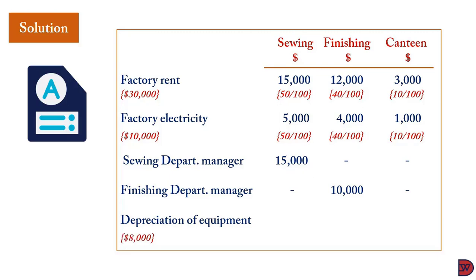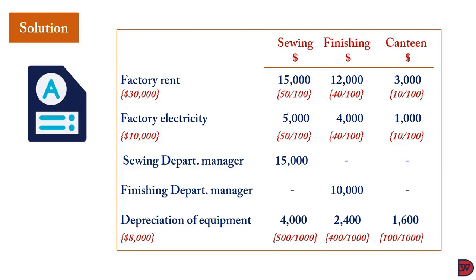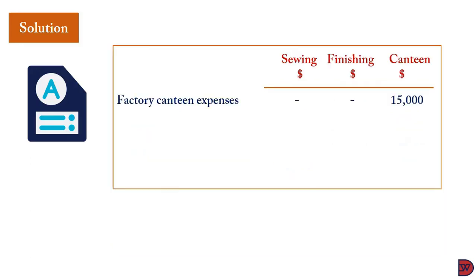For depreciation of equipment, we use net book value as the most appropriate criteria. The cost is $8,000. The net book values are: sewing $500,000, finishing $400,000, canteen $100,000 — summing to $1,000,000. So sewing gets 500/1000 × $8,000 = $4,000; finishing gets 400/1000 × $8,000 = $3,200.